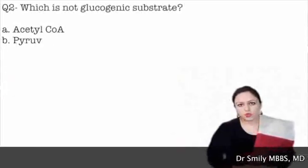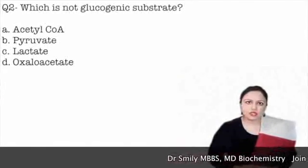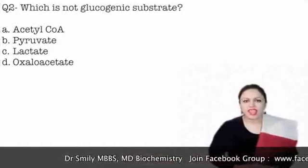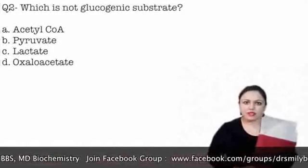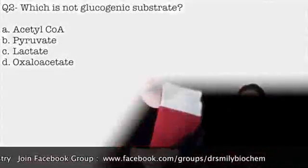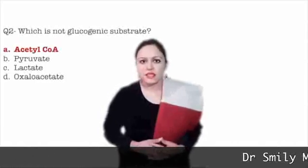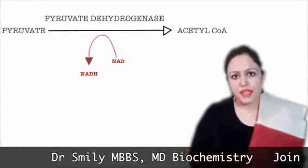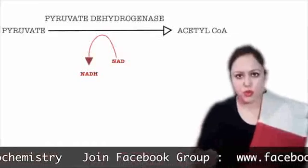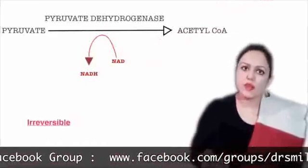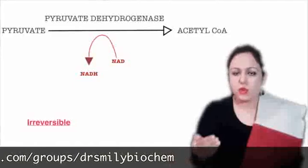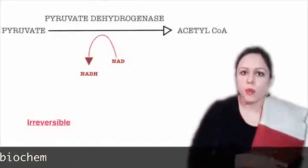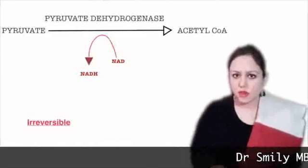Question number 2: which is not glucogenic? Options are acetyl-CoA, pyruvate, lactate, oxaloacetate. They are asking which substance can never give rise to glucose. The answer is acetyl-CoA. In the link reaction, pyruvate can form acetyl-CoA, but this reaction is irreversible — acetyl-CoA can never form pyruvate. So acetyl-CoA is never glucogenic.